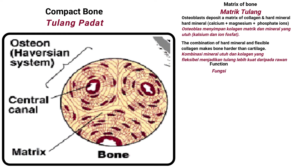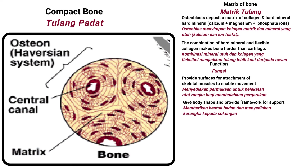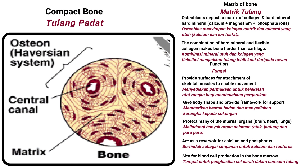Function of compact bone: provides surfaces for attachment of skeletal muscle to enable movement; gives body shape and provides a framework for support; protects many internal organs; acts as a reservoir for calcium and phosphorus; and is a site for blood cell production in the bone marrow.